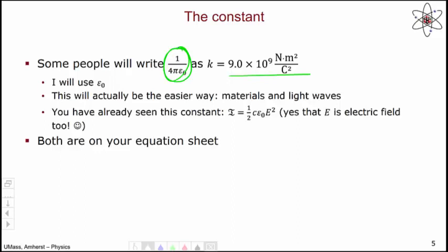However, both epsilon naught and k are on your equation sheet. In fact, we have already seen the constant epsilon naught in one of our equations, the equation relating the amplitude of light to the intensity of light. That's the same epsilon naught. And in fact, looking ahead, this E in this equation stands for electric field. This is already starting to tell us something: that electric fields and light are going to be deeply connected in some interesting way that we'll talk about in our last unit.